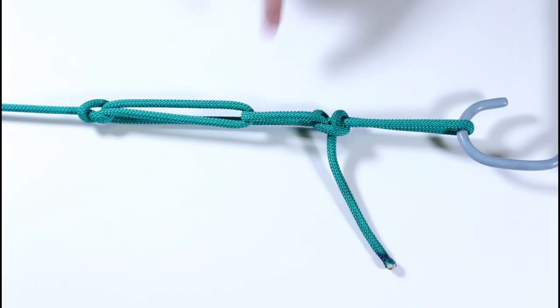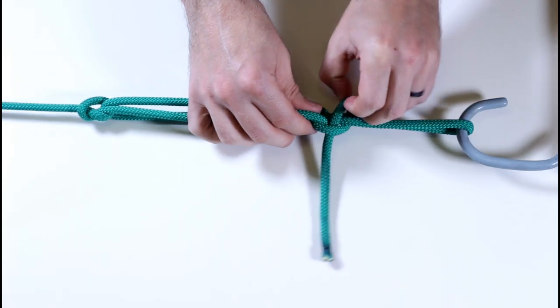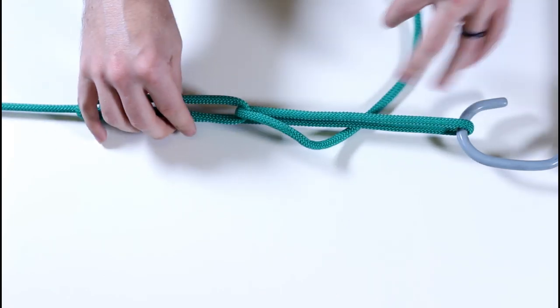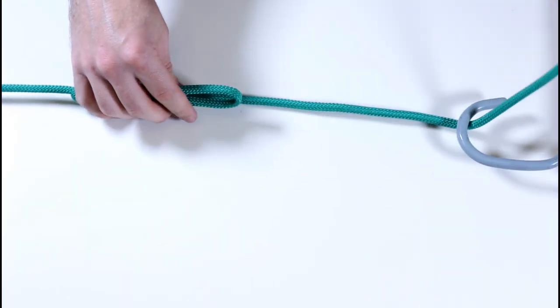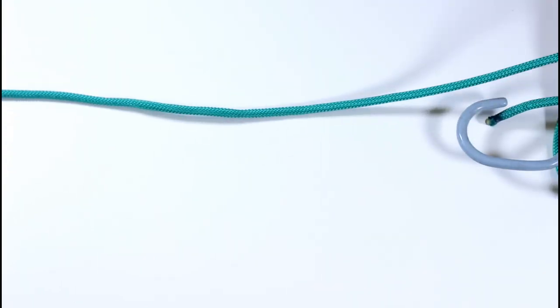Trucker's hitch. Whether you're helping someone move or pitching a tent, sometimes you want to pull a rope as tight as possible. What we're going to do here is create a pulley with the rope itself, something that will allow you to cinch it down harder than you'd be able to if you were just pulling it straight down, and easily untie it.